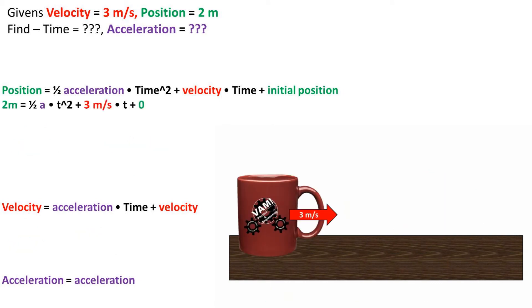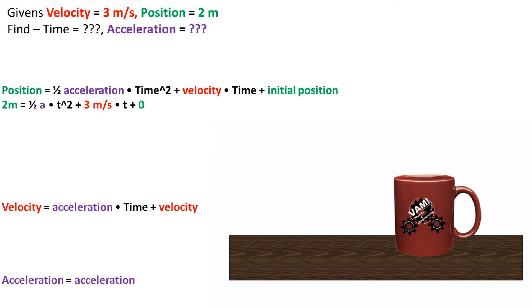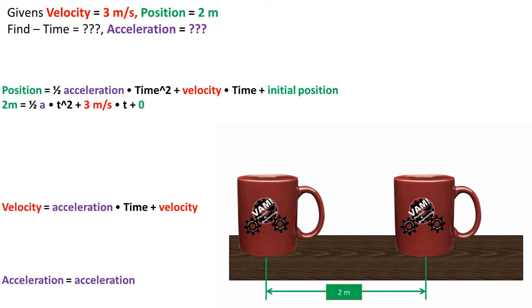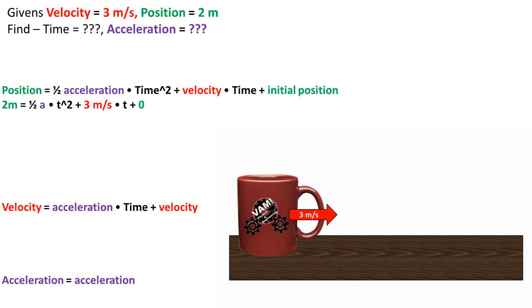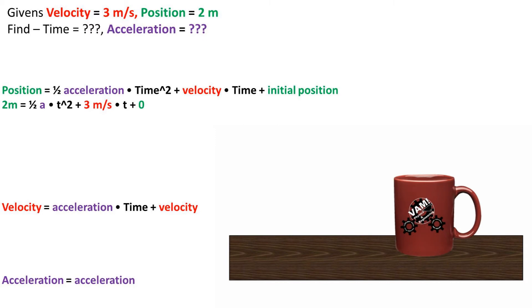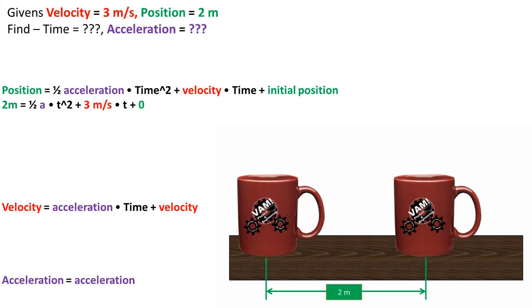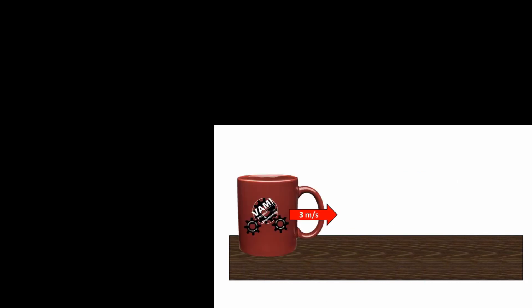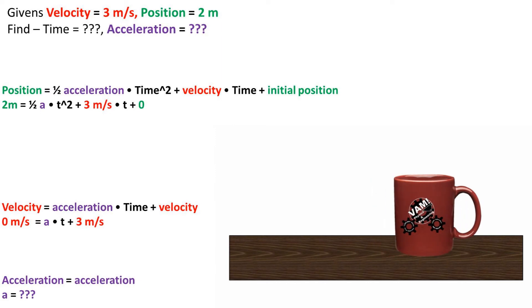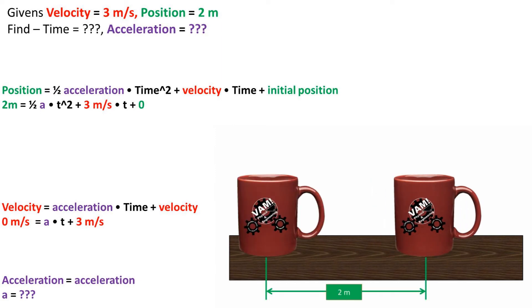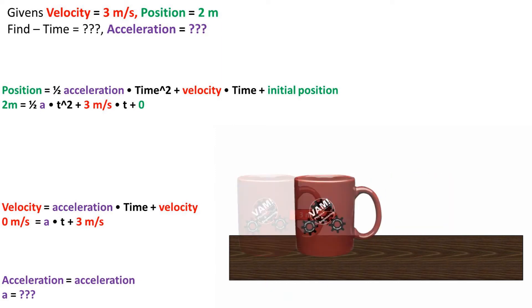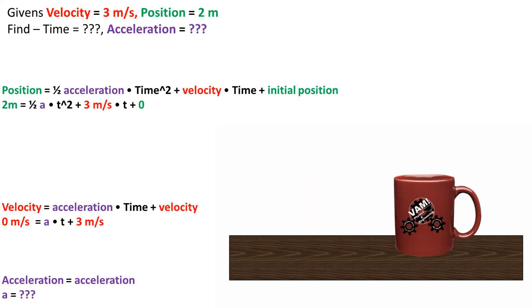Let's start by plugging in our numbers. We will be using the final position of 2 meters in the position formula along with the 3 meters per second initial velocity. We will be assuming our initial position is 0. Then for the velocity equation, we will plug in our final velocity of 0 meters per second and our initial velocity of 3 meters per second.